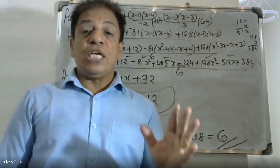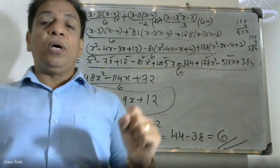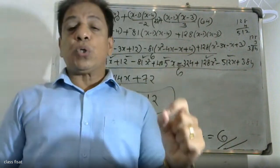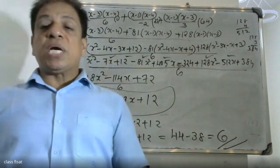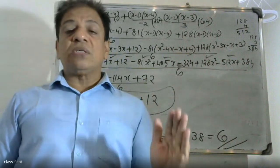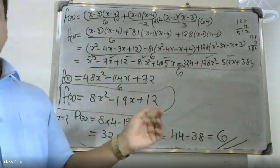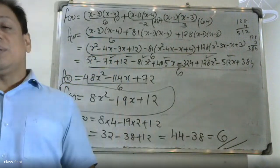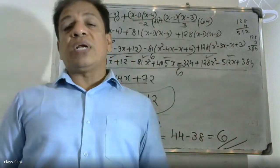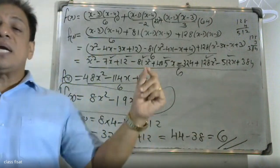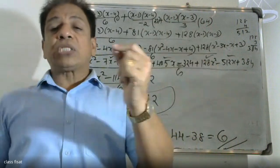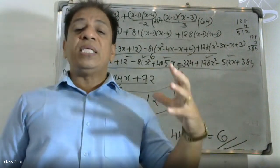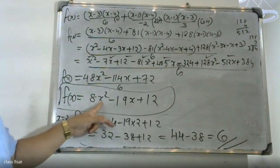To summarize: the Lagrangian interpolation method uses the formula Pn(x) = sigma i=0 to n of Li(x)·yi. We computed L0(x), L1(x), and L2(x), substituted them into the formula, simplified to get the polynomial 8x² - 19x + 2. Substituting x=2 gives f(2) = 6.